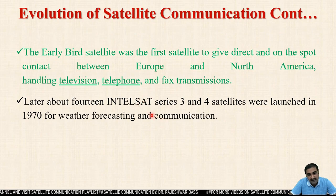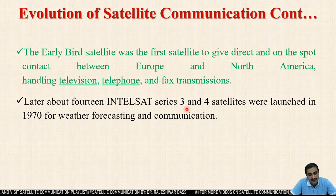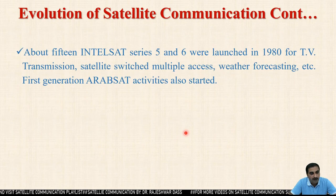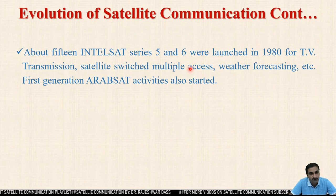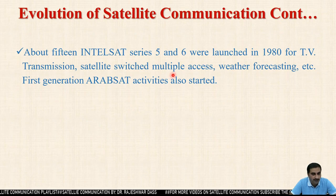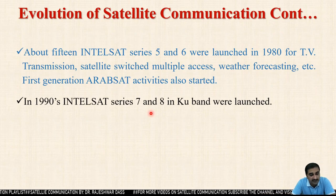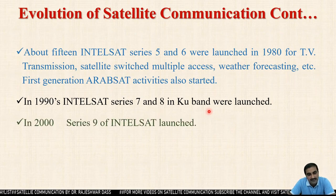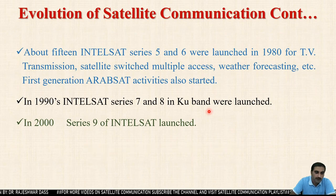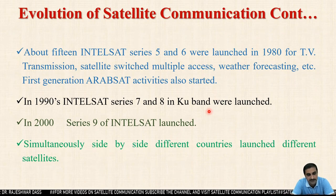About 14 Intelsat series 3 and 4 satellites were launched in 1970 for weather forecasting and communication. About 15 Intelsat series 5 and 6 were also launched in the 1980s for TV transmission, satellite-switched multiple access, and weather forecasting. In the 1990s, Intelsat series 7 and 8 in the Ku-band were also launched. In 2000, series 9 of Intelsat was launched. Side by side, many countries also launched their own different satellites.